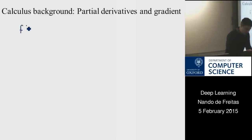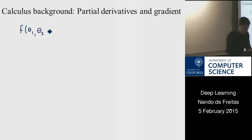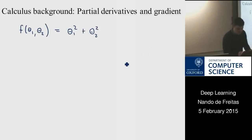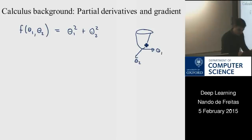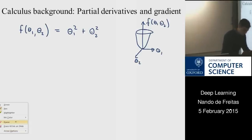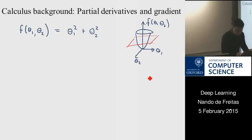Very quick background. Suppose you have a function of two variables — a function that depends on the variables theta1 and theta2. Let's assume, for example, that it's this quadratic bowl that we've seen before, centered at theta1 and theta2, and its height is f of theta1 and theta2. We can cut planes, and if we visualize it from the top, we will see circles as our contours.